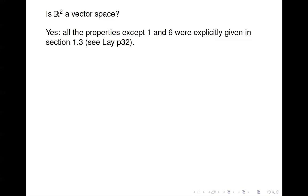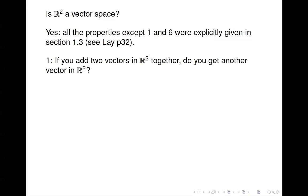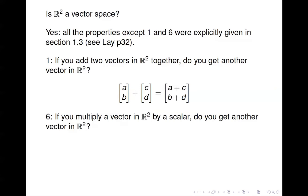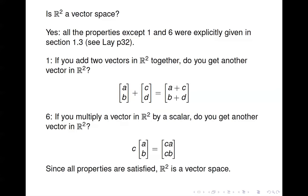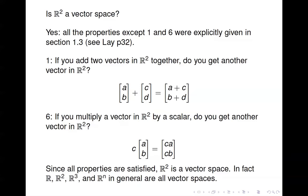Let's think about axioms one and six for R2. Number one: if you take two vectors from R2 — say AB and CD — and add them together, you get A plus C, B plus D. That's another vector in R2, so the answer is yes. Number six: if you multiply a vector in R2 by a scalar, you get another vector in R2 with both components real numbers. Therefore R2 is a vector space. In fact, the set of real numbers, R2, R3, and Rn in general are all vector spaces.